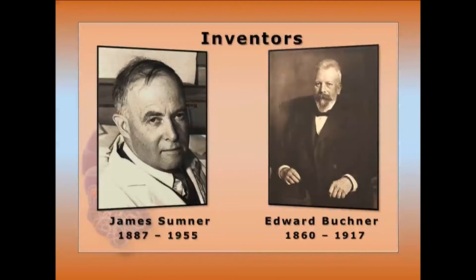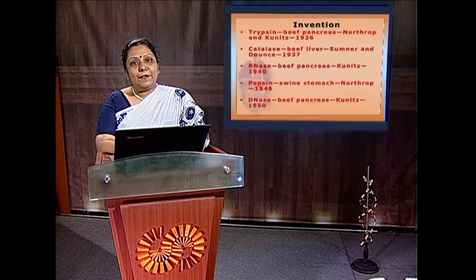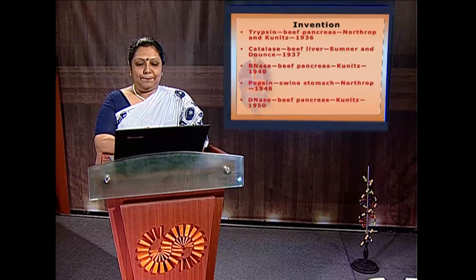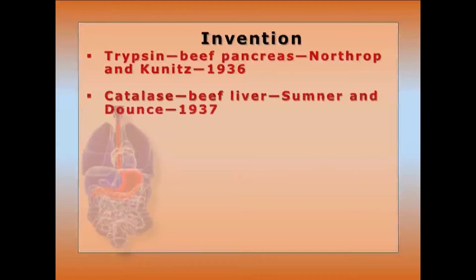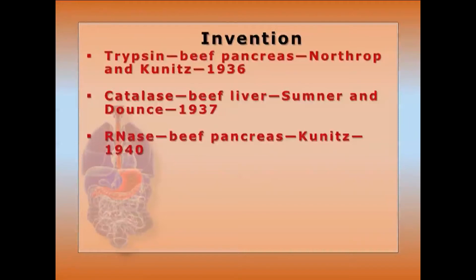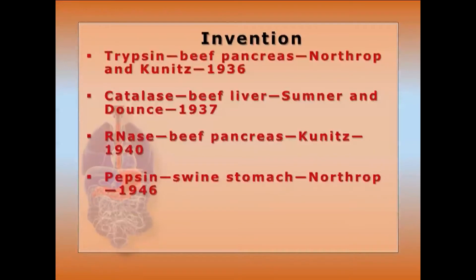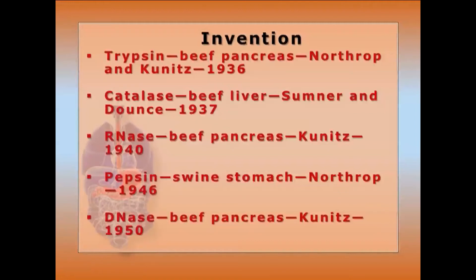J. Sumner in 1926 first characterized, purified, and isolated the first enzyme urease. Trypsin was first isolated from beef pancreas by Northrop and Kunitz in 1936. Catalase was isolated from beef liver by Sumner and Dounce in 1937. RNase was isolated from beef pancreas by Kunitz in 1940. Pepsin was isolated from swine stomach by Northrop in 1946. DNase was isolated from beef pancreas by Kunitz in 1950.